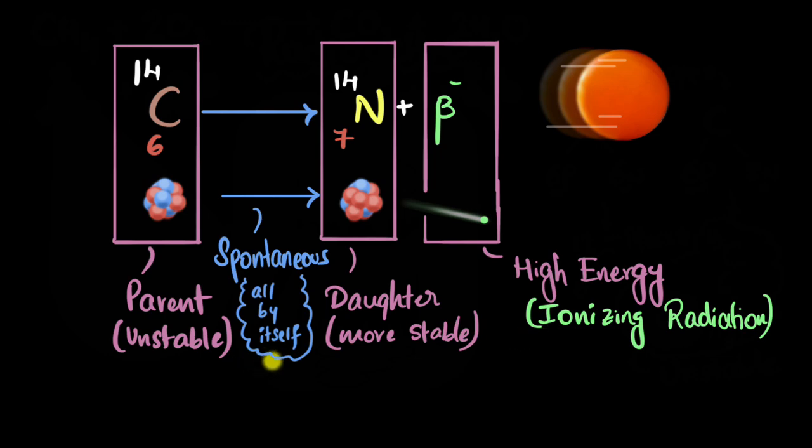Anyways, that's it for this video. So in short, what is radioactivity or what is radioactive decay? It's a process in which you have an unstable nucleus that spontaneously changes to a new, more stable nucleus, and in doing so, it releases high-energy ionizing radiation.